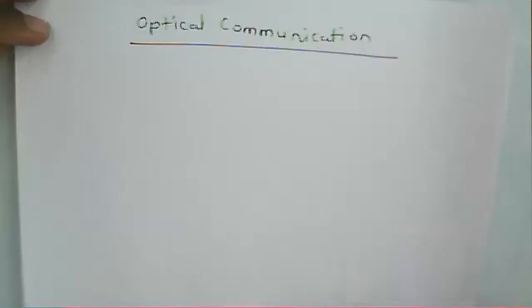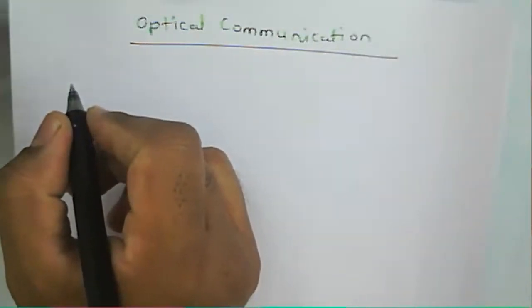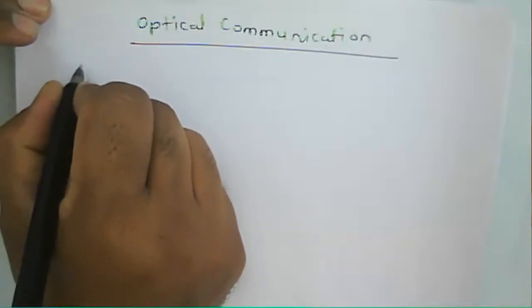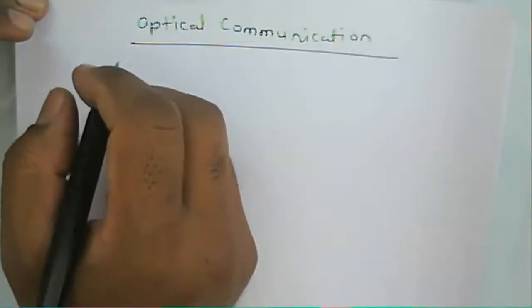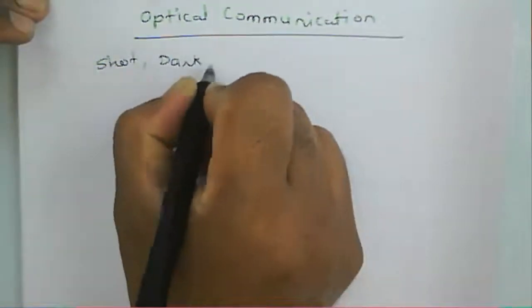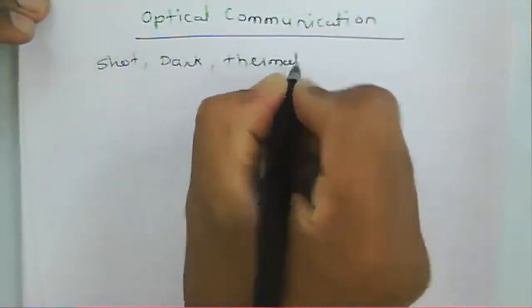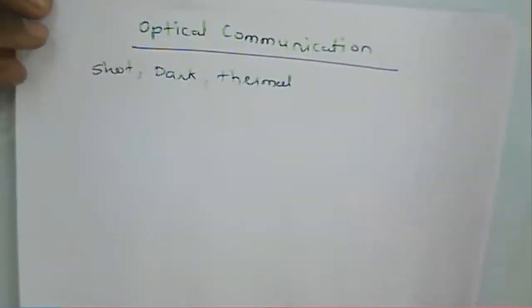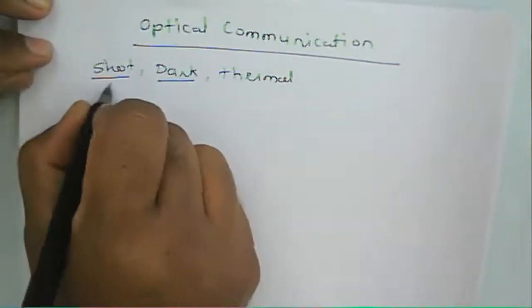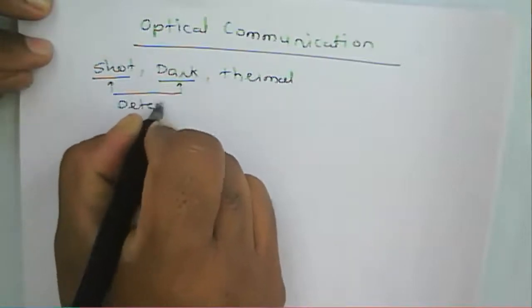Welcome to the optical communication course. Now we will see the optical receiver operation. We have seen the various noise sources: shot noise, Poisson noise, dark noise, and thermal noise. These are the noise sources that occur at the detector.